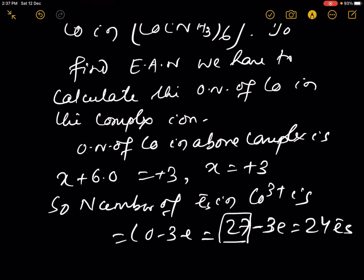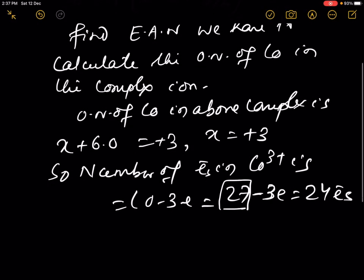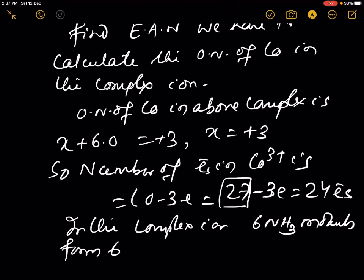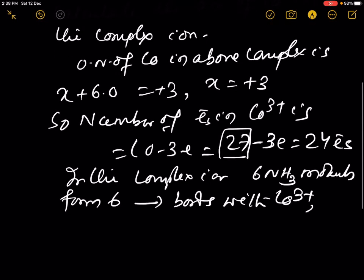After removing 3 electrons, you will get 24 electrons. In the complex ion, 6 ammonia molecules form 6 coordinate bonds with Co3+.